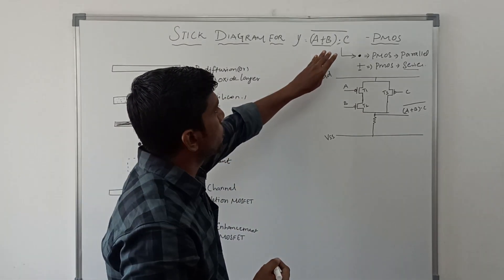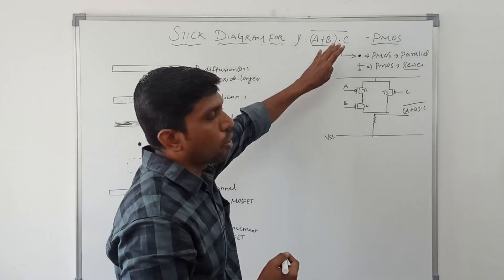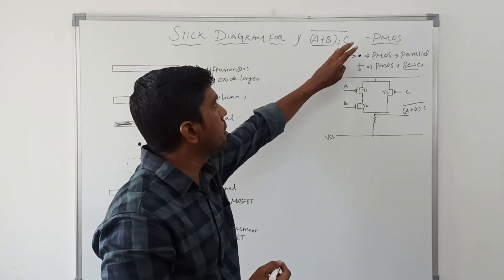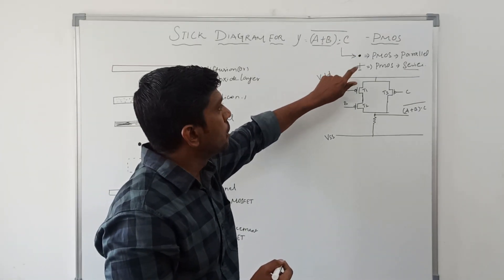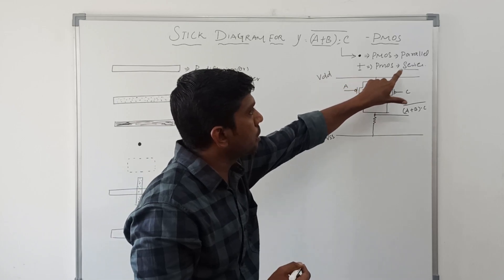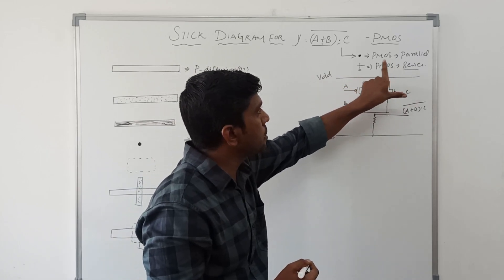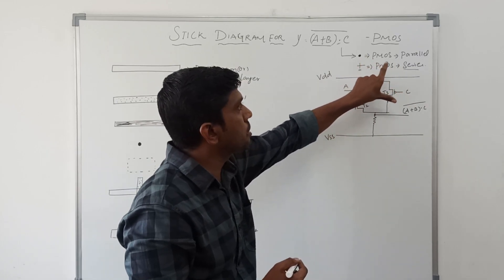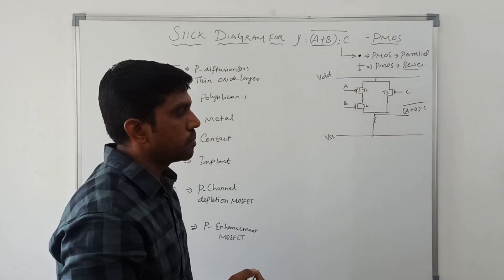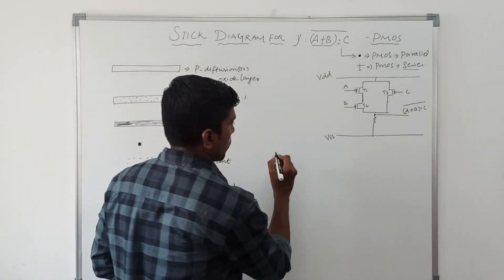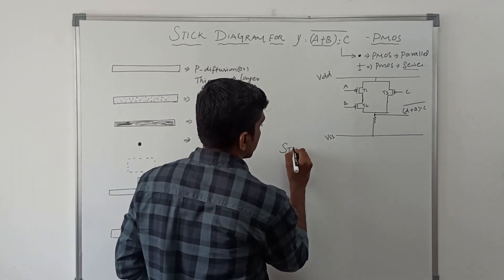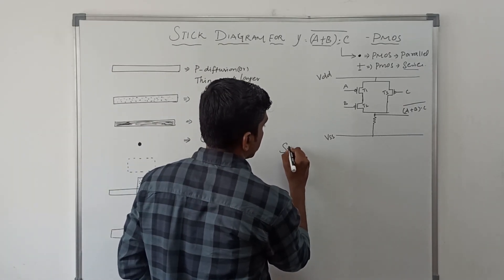If you have any equation, first find the operator — plus operator or dot operator. A plus operator means PMOS connects in series; a dot operator means PMOS connects in parallel. Now I am going to draw the stick diagram.